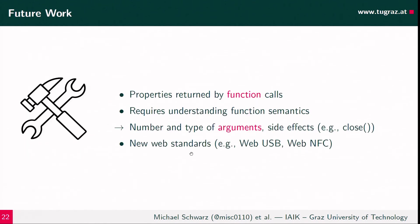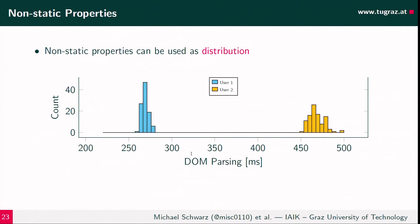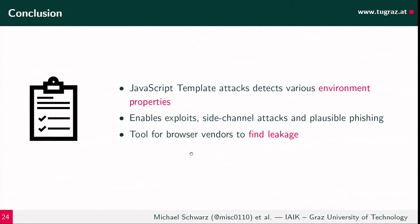As future work, we want to add function return values, though this is tricky because you need to know the semantics of functions and handle side effects. We're also looking at new web standards like WebNFC and WebUSB, which require user interaction. We also looked at non-static properties like timestamps that could be used as histograms for fingerprinting. In summary, these template attacks allow automatically detecting properties that leak environmental information, useful for targeting exploits, fingerprinting, and also for browser vendors like the Tor browser to find leakage.